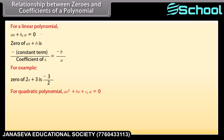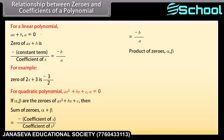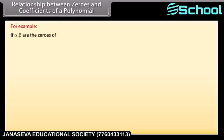For quadratic polynomial ax squared plus bx plus c, where a is not equal to 0, if alpha and beta are the zeros, then the sum of zeros alpha plus beta equals minus coefficient of x upon coefficient of x squared, which equals minus b upon a. The product of zeros alpha times beta equals constant term upon coefficient of x squared, which equals c upon a. For example, if alpha and beta are zeros of 2x squared plus 3x plus 2, then alpha plus beta equals minus 3 upon 2, and alpha times beta equals 2 upon 2 which equals 1.